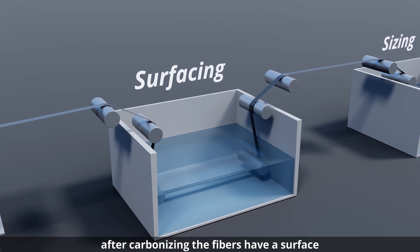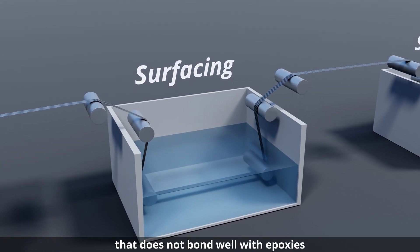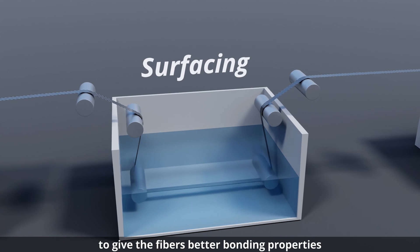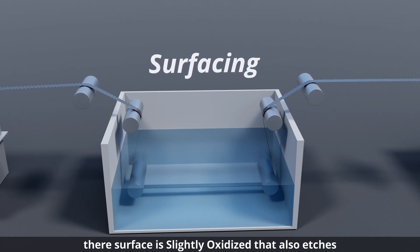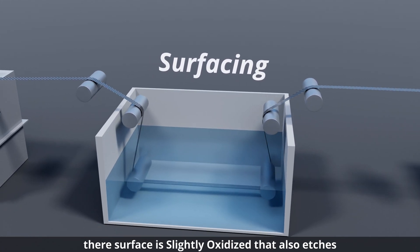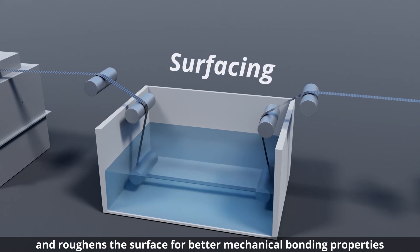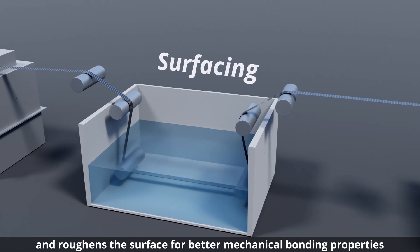After carbonizing, the fibers have a surface that does not bond well with epoxies. To give the fibers better bonding properties, their surface is slightly oxidized, which also etches and roughens the surface for better mechanical bonding properties.